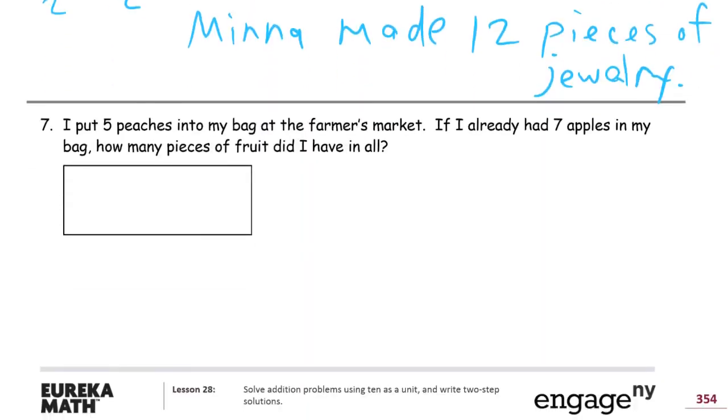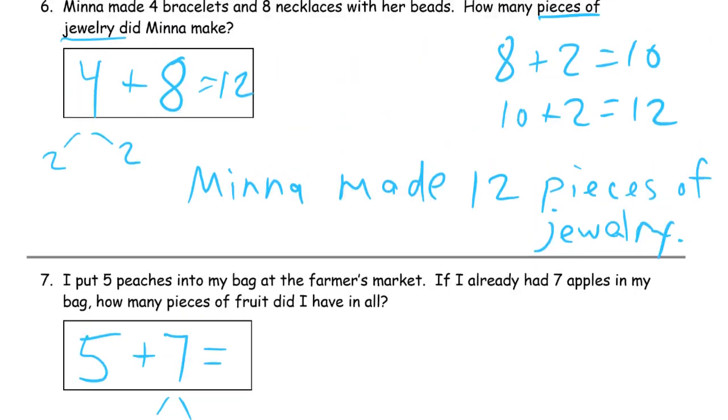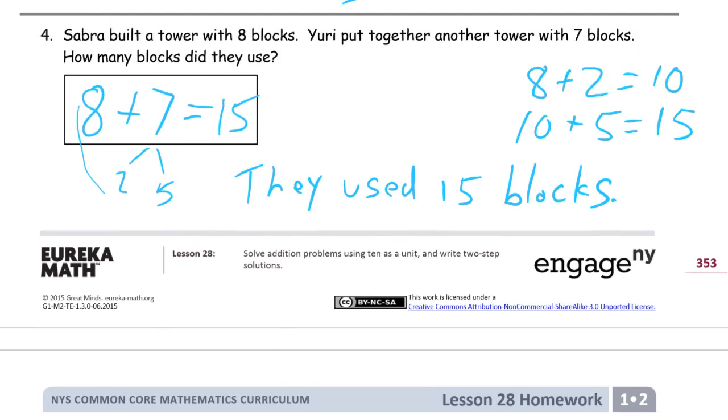Number 7. I put 5 peaches into my bag at the farmer's market. If I already had 7 apples in my bag, how many pieces of fruit did I have in all? All right. So there's the 5 peaches plus the 7 apples I already had. And I see a 5 and I start looking for another 5. I just can't help it. Because that makes 10. And for the 7, I already know that 2 and 5 are parts of 7 because I had that earlier. That was in the first page right here. We split up 7 into a 2 and a 5.